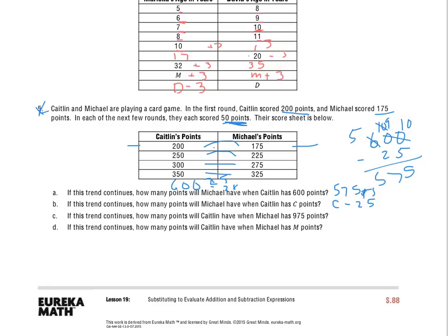If this trend continues, looking at part C: how many points will Kaitlin have when Michael has 975? Michael now has 975. We have to get over to Kaitlin, and I know Kaitlin has 25 more points than Michael. So I'm going to add 25 to get Kaitlin's amount because she always has more — 975 plus 25 — which shows that Kaitlin has 1,000 points. For the last statement: how many points will Kaitlin have when Michael has M points? If Michael has M points, we add 25 because Kaitlin always has 25 more. So it would be M plus 25 to get Kaitlin's score.